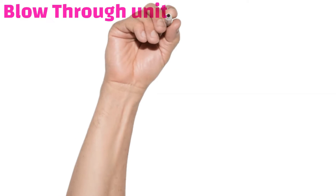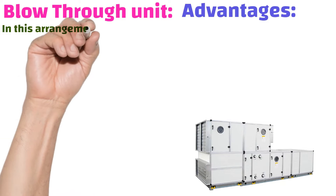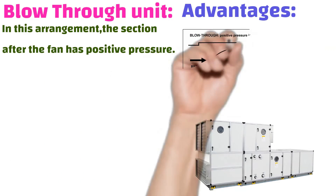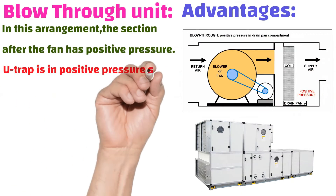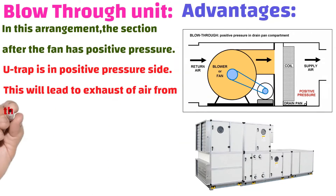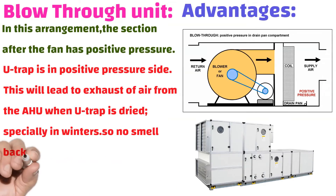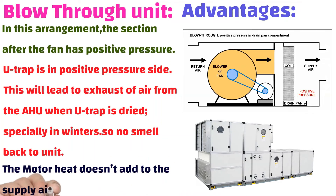Advantages of the blow through unit: In this arrangement, the section after the fan has positive pressure, so the U-trap is on the positive pressure side. This will lead to exhaust air from the AHU when the U-trap is dried, especially in winter. So there is no smell air returning back to the unit. The motor heat does not add to the supply air.